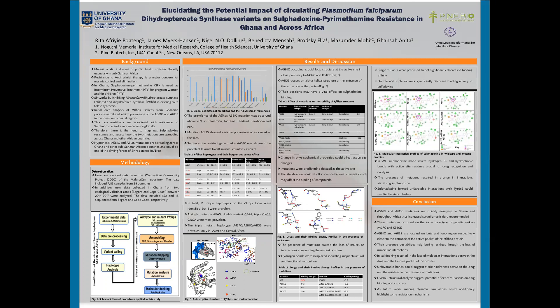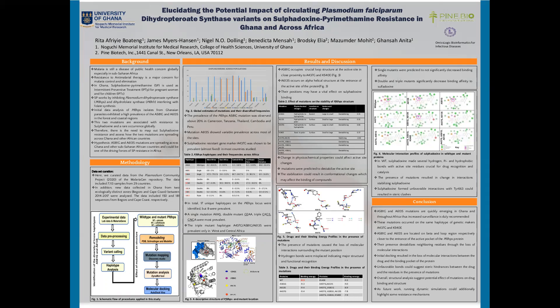In Ghana, sulfadoxine-pyrimethamine is used as an effective agent for intermittent preventive treatment for pregnant women and children. SP functions by inhibiting Plasmodium dihydropteroate synthase and dihydrofolate reductase, interfering with folate synthesis.